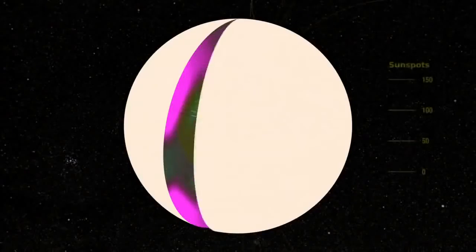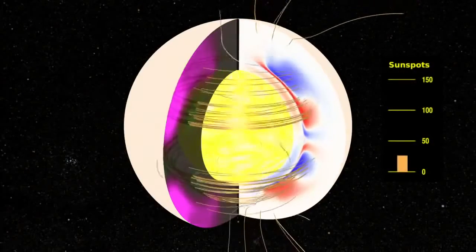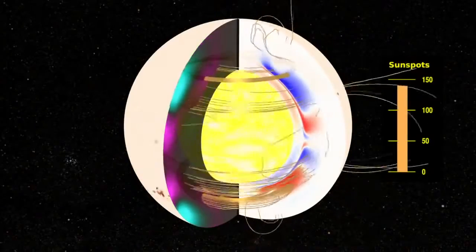Solar flares and CMEs are all driven by magnetic reconnection. This is where the Sun twists up the magnetic field and then it causes oppositely directed magnetic fields to annihilate.